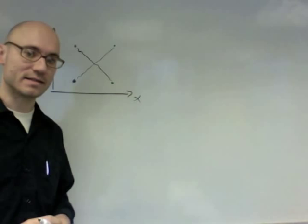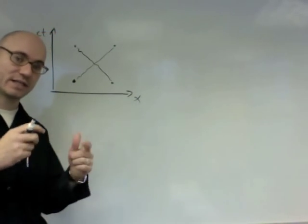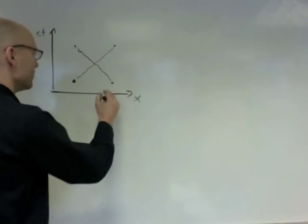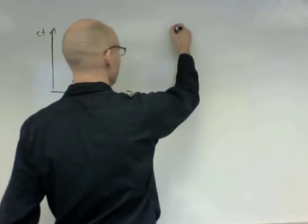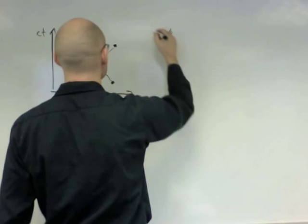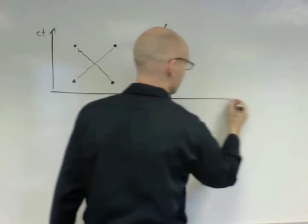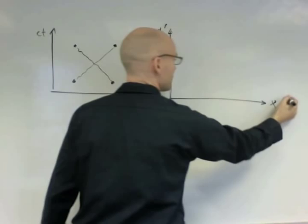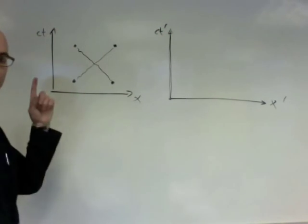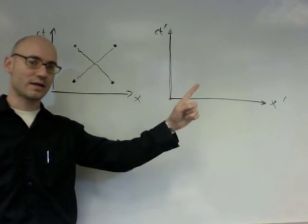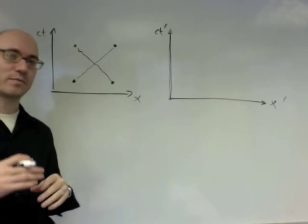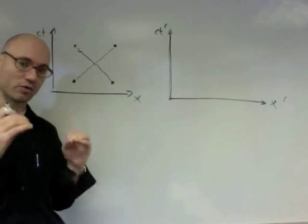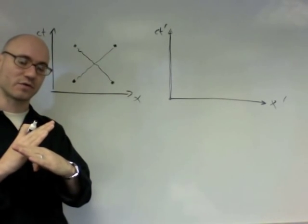Then if we transform this square to a new frame, it's moving to a new frame, with respect to this frame, then these four events will no longer be in a square pattern in this, but in a diamond pattern that permits, that holds the photon trajectories at 45 degrees.